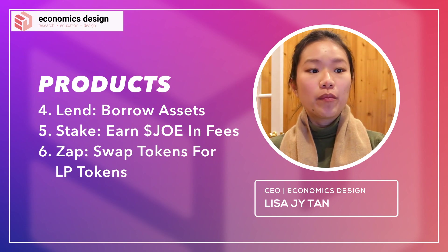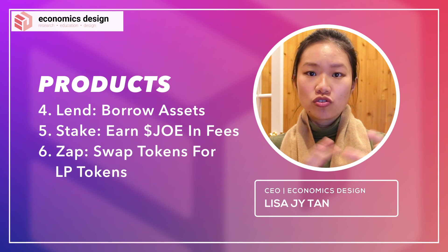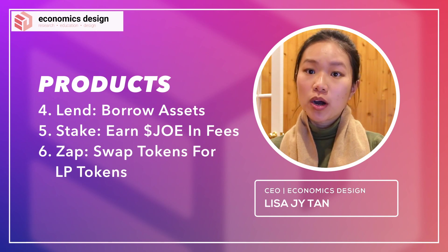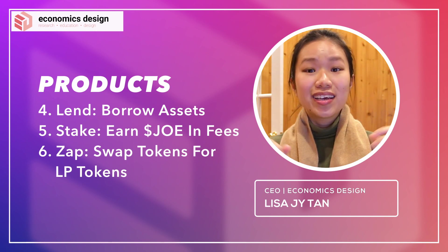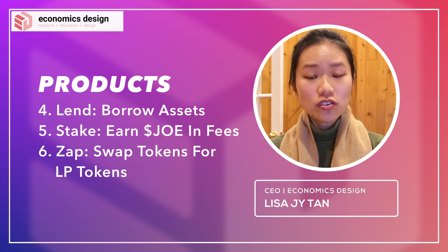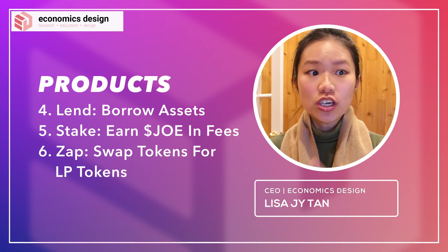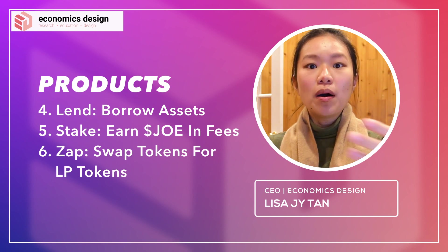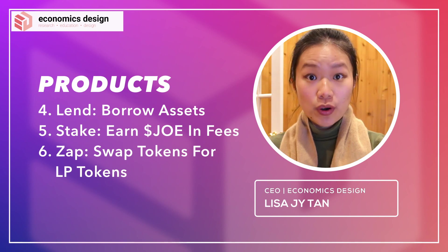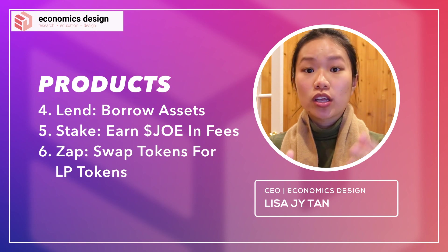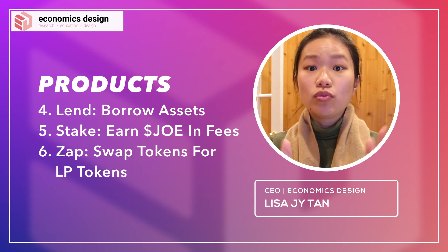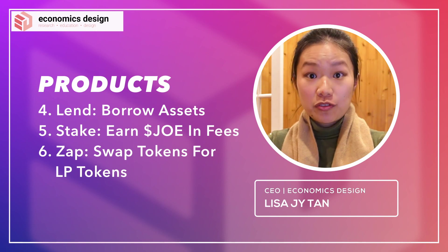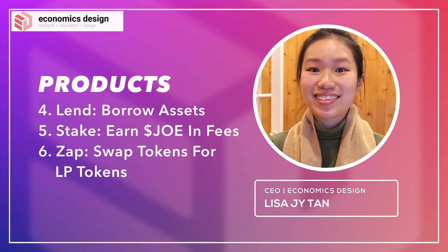These are the six different products that form up the market. Each is structured in a different way — very different market structures. In a token ecosystem, you can have one market structure per market you're creating, since the reasons for people to trade can vary greatly across different kinds of markets.